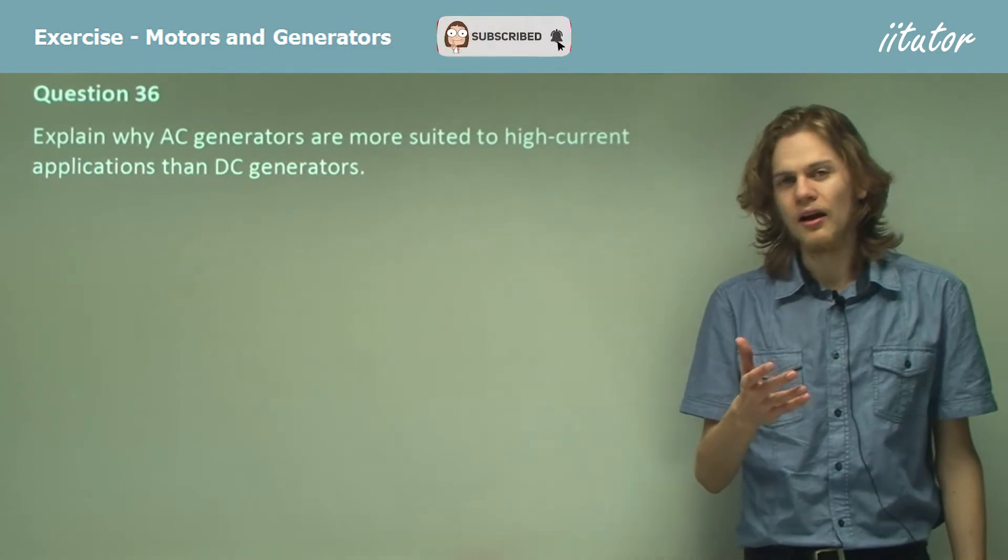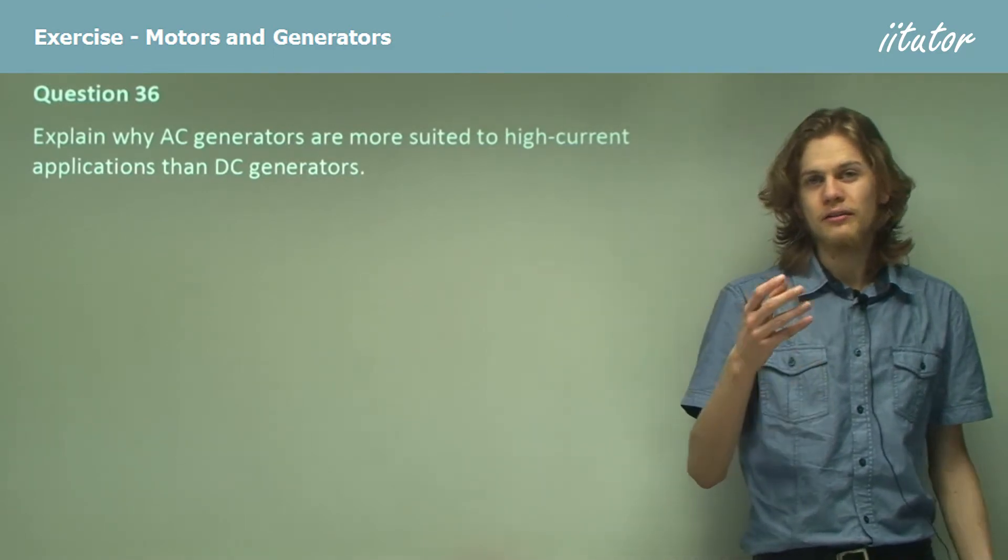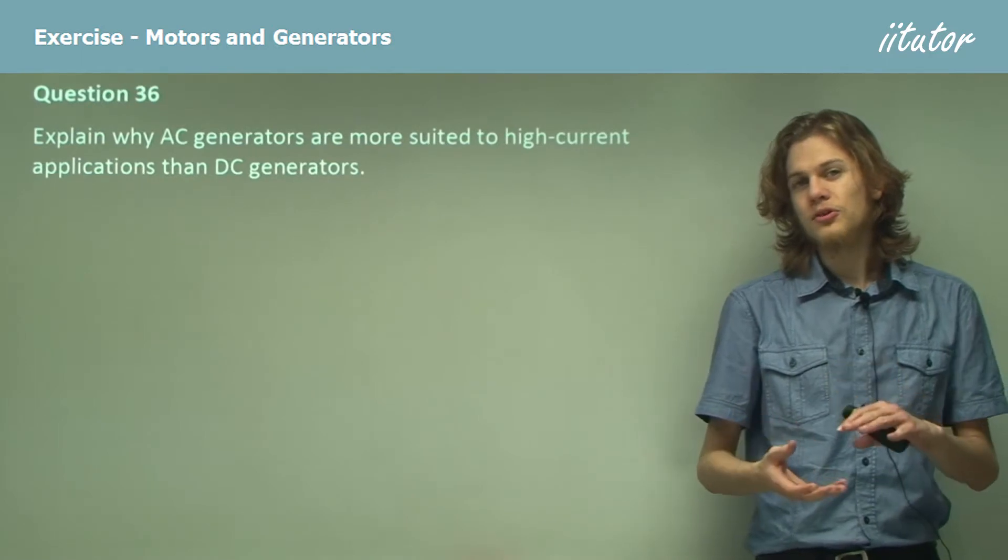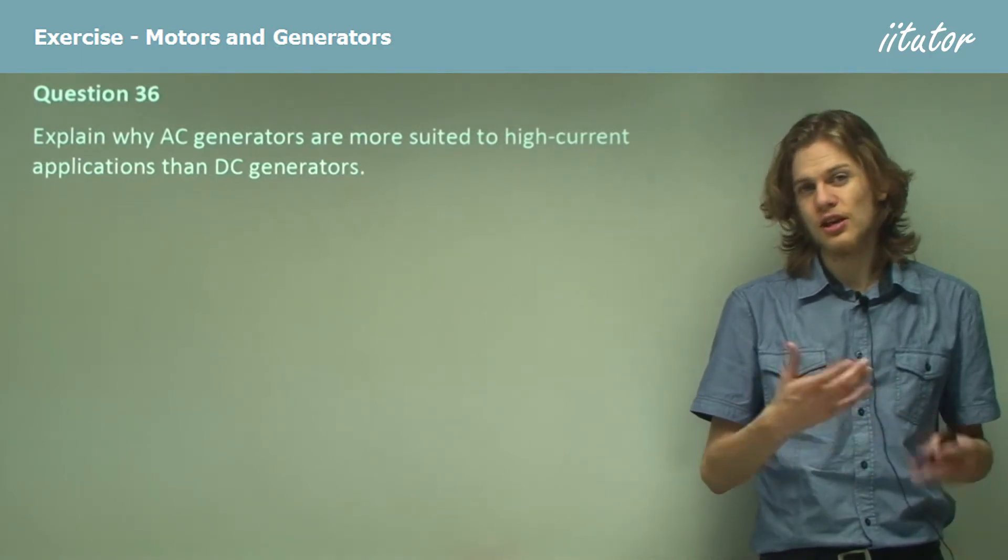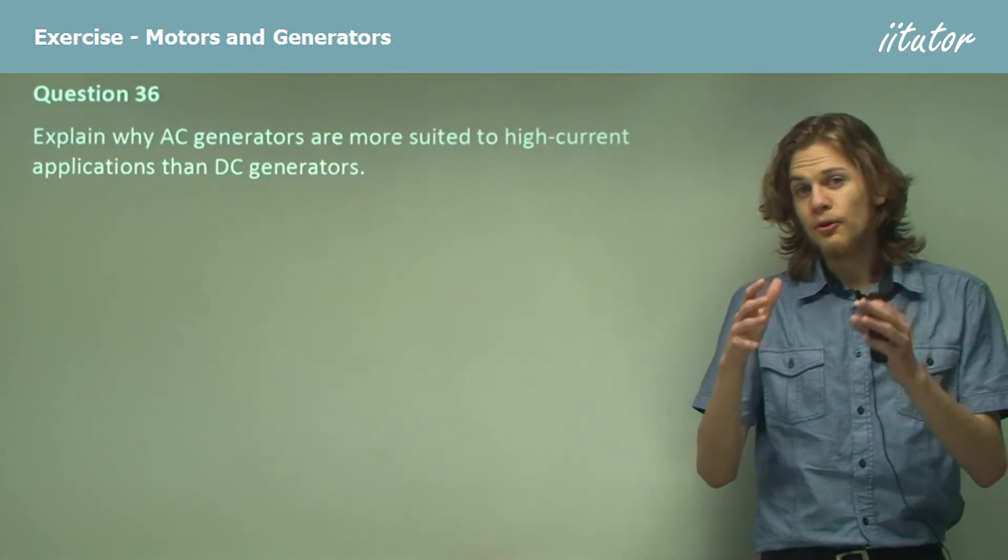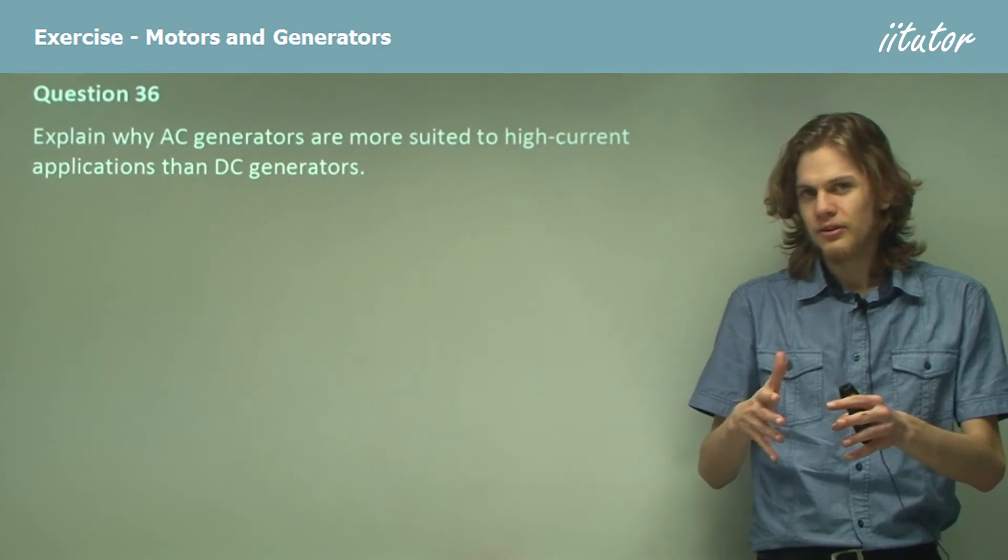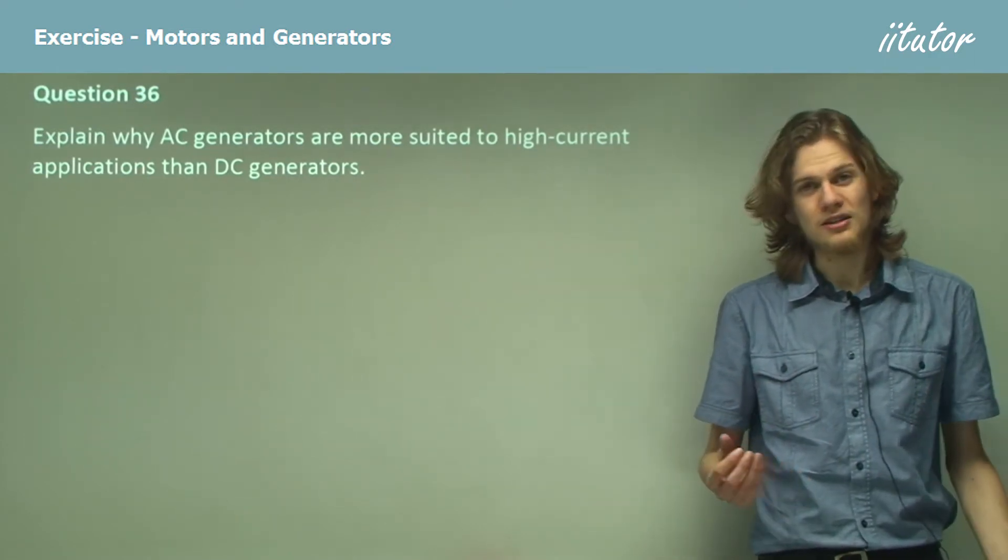In a DC generator, it tends to be the rotor, but in most AC generators used in power plants, the rotor isn't where the current is produced. The current is produced in the stator, which stays still.